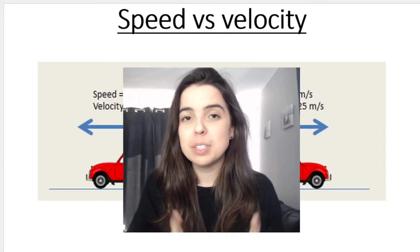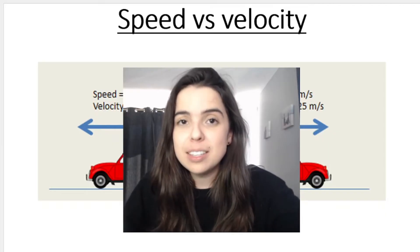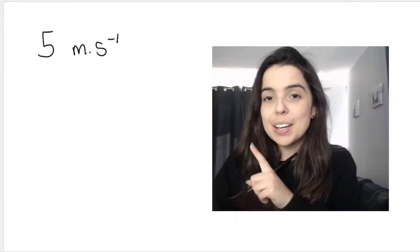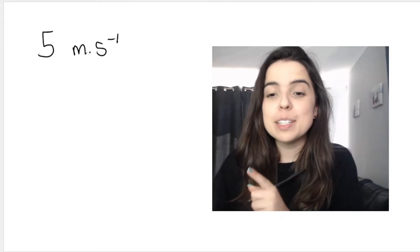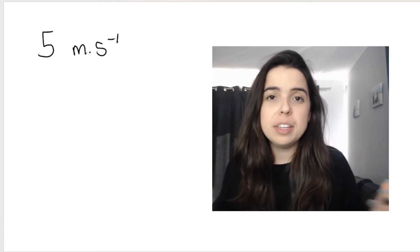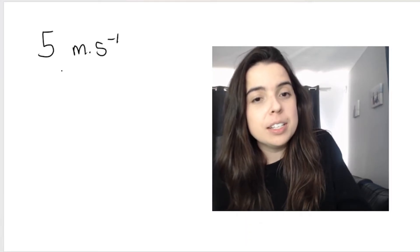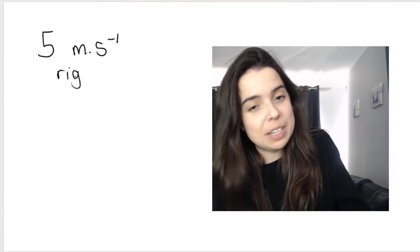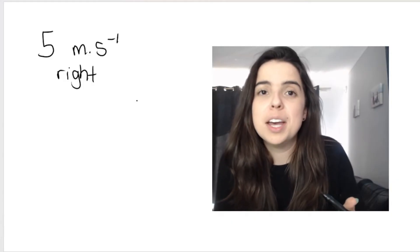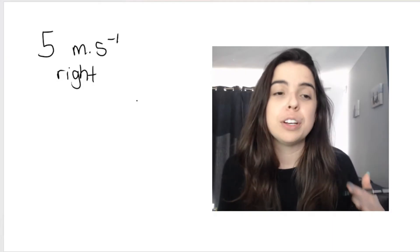What confuses people sometimes is that the unit for speed and velocity is both meters per second — that's the SI unit, the standard unit. So if you see five meters per second, you might be confused as to whether they're referring to speed or velocity. If they say five meters per second to the right, or five meters per second east, they're probably referring to velocity because velocity has a direction. Five meters per second on its own can be referring to speed.